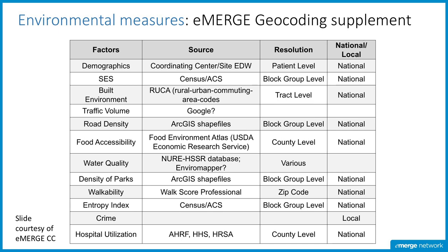A newer model brought in recently with a supplement is geocoding. As you can see, you can get a lot of socioeconomic, food accessibility, traffic, and environmental data — there's a lot built into this geocoding. This is another way, without going back to patients, that we can use existing data to get a lot more information for our analyses, to look for gene-by-environment interactions, and to stratify our analyses. We're looking forward to having those data available.